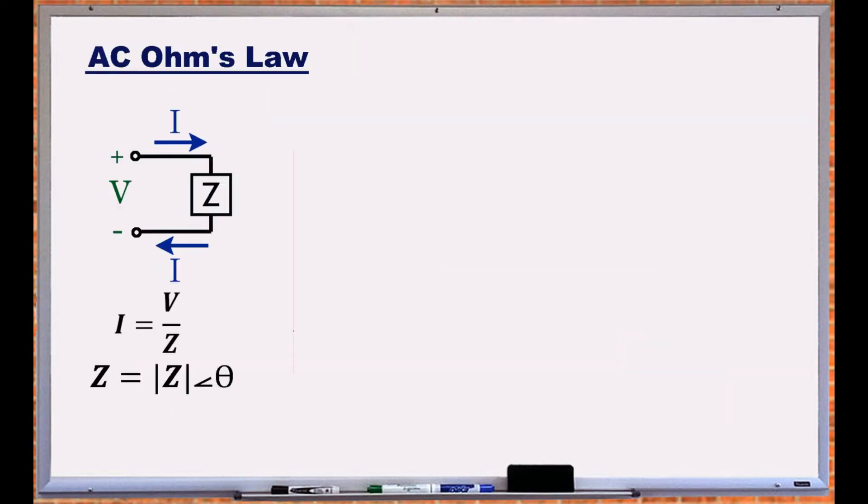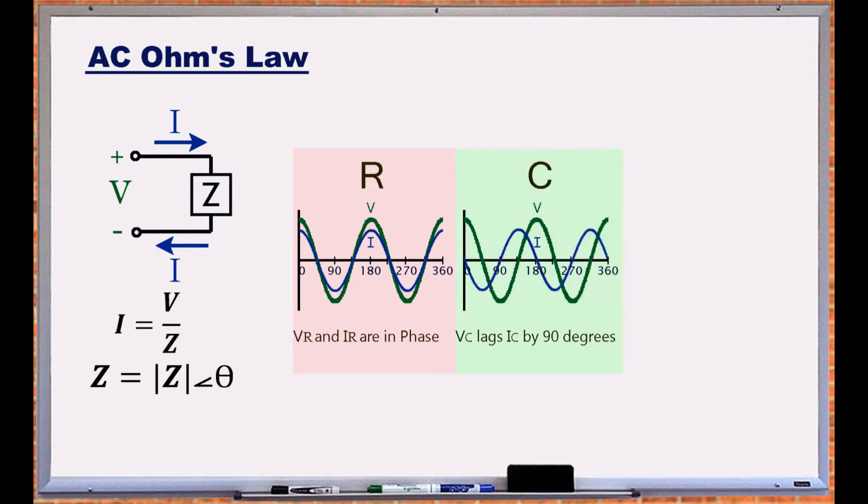Ohm's law defined as V over Z calculates the current for AC circuits. Impedance only affects the magnitude of the current in its resistive form. It additionally results in a phase shift between the voltage across a component and the current through it in capacitive and inductive forms.